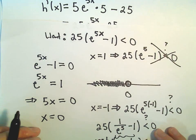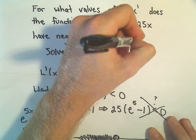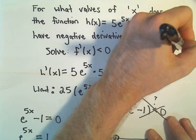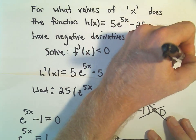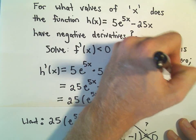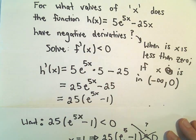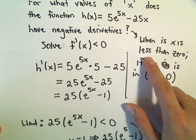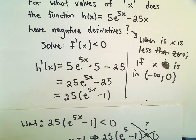So it looks like the original solution for what values of x does our function have negative derivatives. We could say when x is less than 0, or we could say if x is in the interval from negative infinity up to 0, but not including it. So just two different ways of saying the same thing. We could just say x is less than 0, or if x is in this interval from negative infinity up to 0.